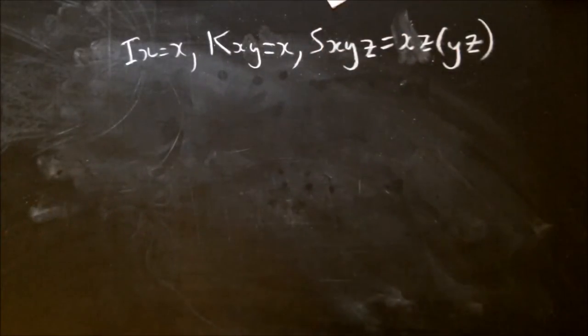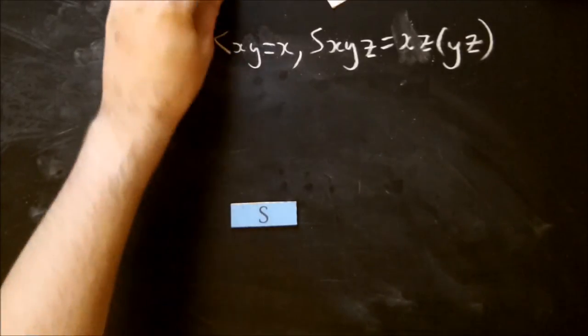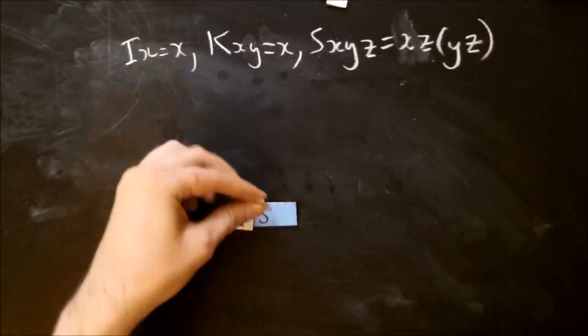What's the first one I'm going to do? Oh, you can make a combinator that takes a single argument and applies it to itself. So what it looks like is s-i-i.